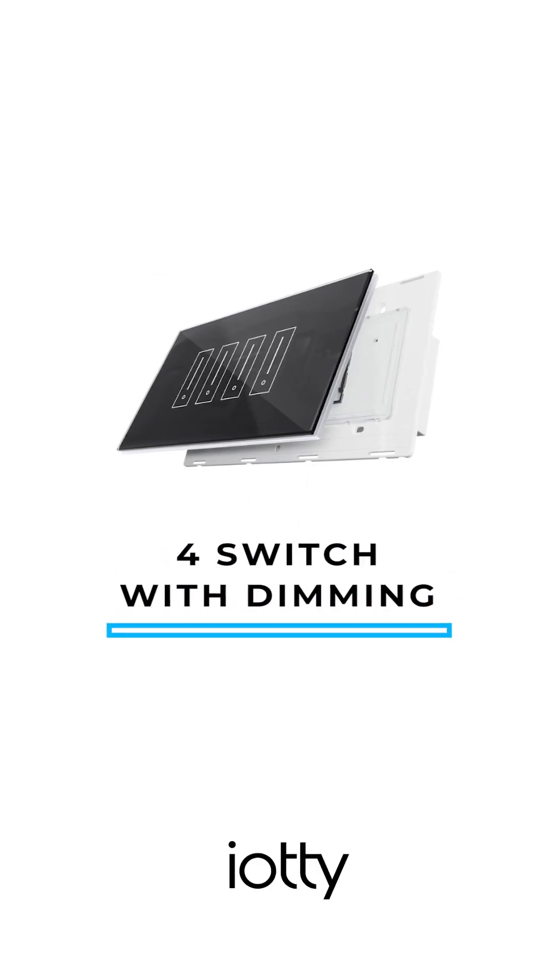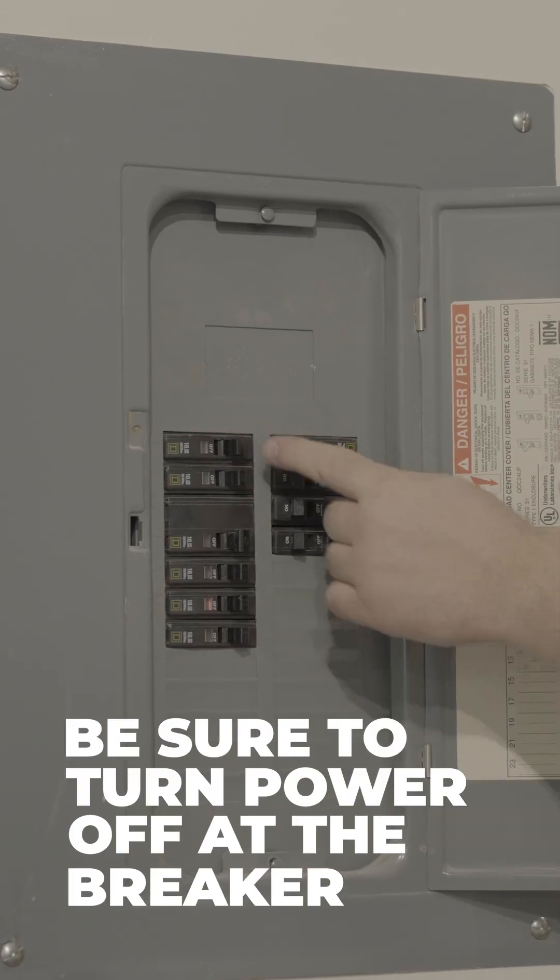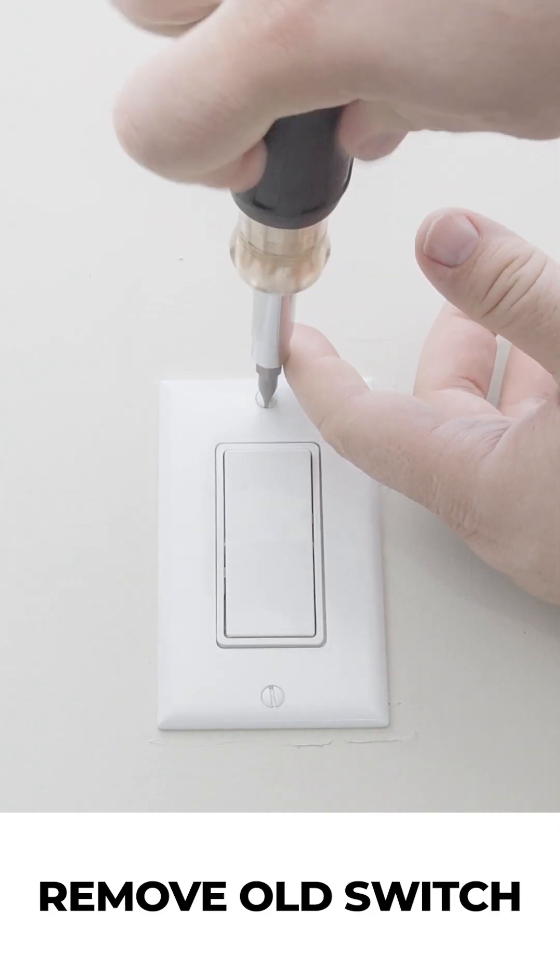This video will show a step-by-step instruction of installing a 4-gang IOTI smart switch in a single-way setup. Turn power off at the breaker. Remove your old switch.